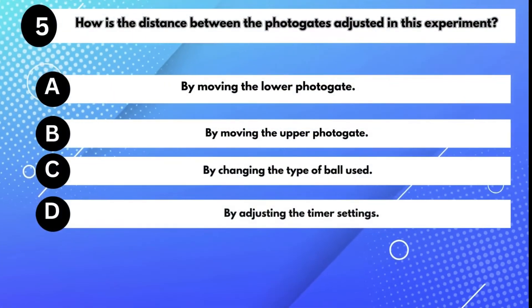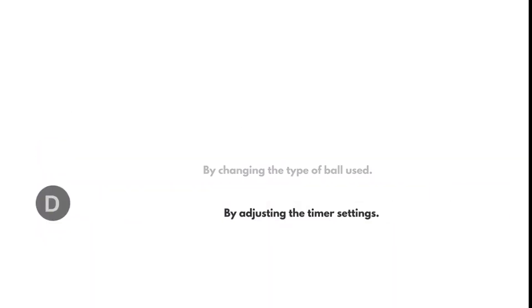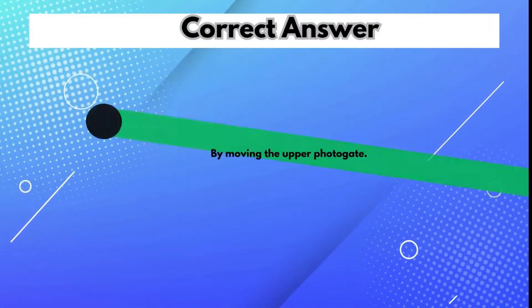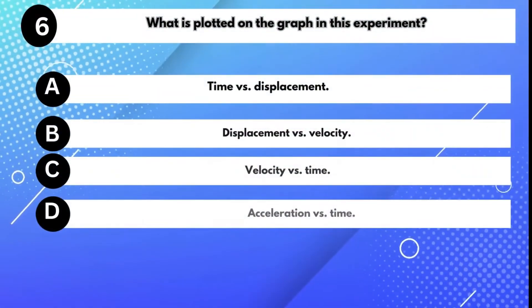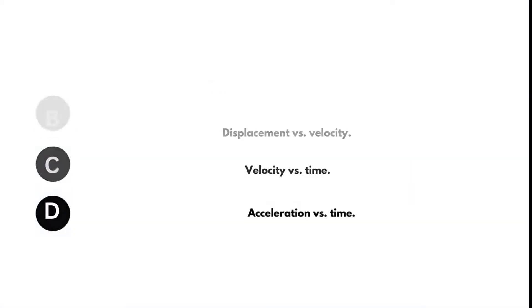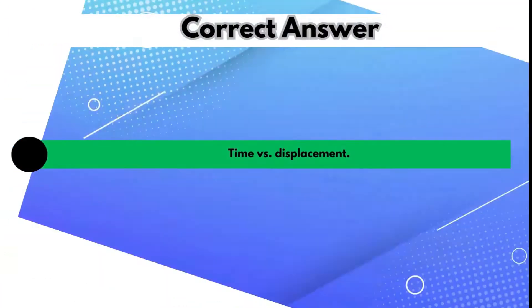How is the distance between the photogates adjusted in this experiment? Answer B: By moving the upper photogate. What is plotted on the graph in this experiment? Answer B: Time versus displacement.